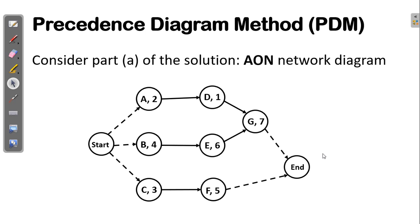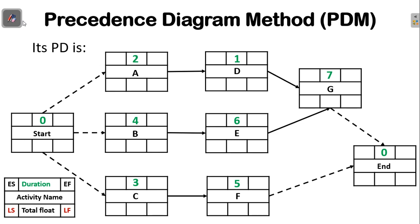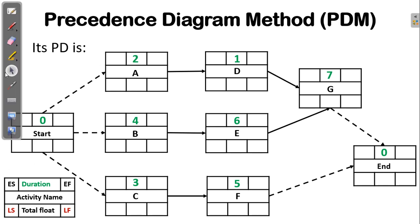The corresponding precedence diagram for this activity-on-node diagram is this one. Each node has a specific labeling: early start time at the top-left corner, duration in the next box, and early finish at the top-right. Below that, we have late start, late finish, and total float. At the middle is the activity name.